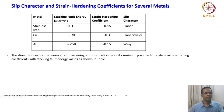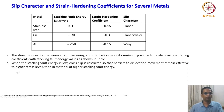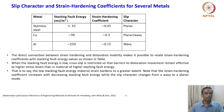The direct connection between strain hardening and dislocation mobility makes it possible to relate strain hardening coefficients with stacking fault energy values, as shown in the table. When the stacking fault energy is low, cross slip is restricted, so the barriers to dislocation movement remain effective to higher stress levels than in materials with higher stacking fault energy. That is to say, the low stacking fault energy material strain hardens to a greater extent. Note that the strain hardening coefficient increases with decrease in stacking fault energy, while the slip character changes from wavy to planar mode.